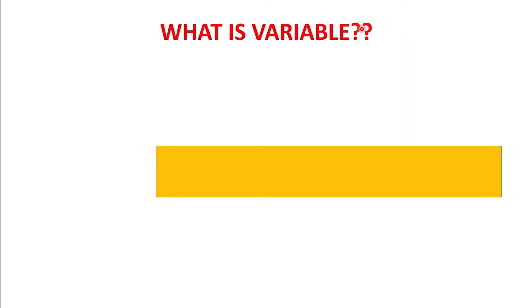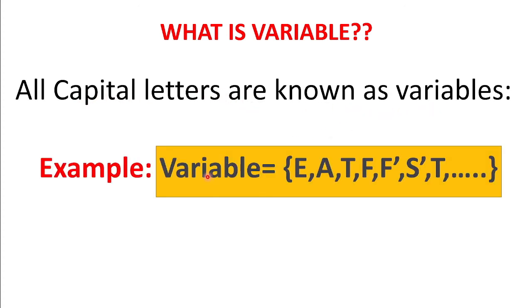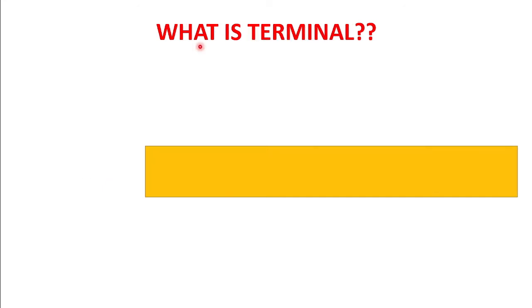So what is a variable? All capital letters are known as variables. For example, E, A, T, F, F-dash — whatever is written in capital letters, that letter becomes a variable.